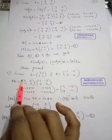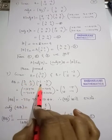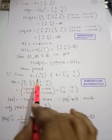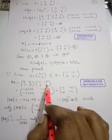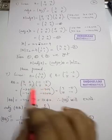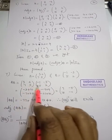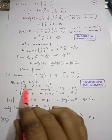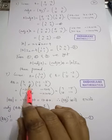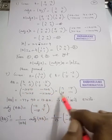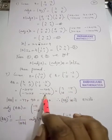First row with first column: 3 into minus 1 is minus 3, plus 2 into 5 is 10. First row with second column: 3 into minus 3 is minus 9, plus 2 into 2 is plus 4. Second row with first column: 7 into minus 1 is minus 7, plus 5 into 5 is plus 25. Second row with second column: 7 into minus 3 is minus 21, plus 5 into 2 is 10. So adding, you will get 7, minus 5, 18, minus 11.